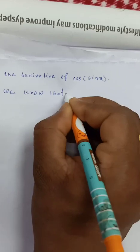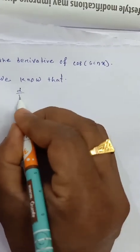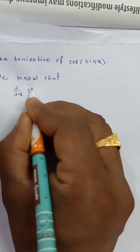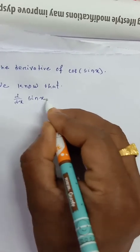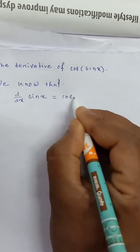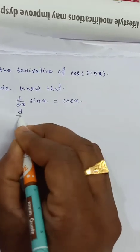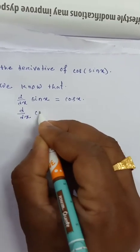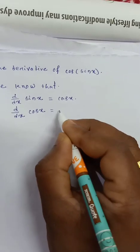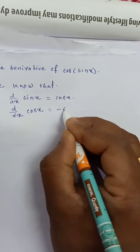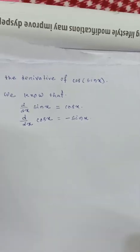We know that the derivative of sin x is cos x. Again, the derivative of cos x is minus sin x.